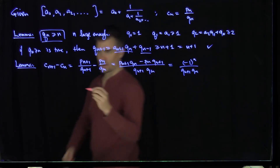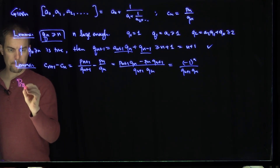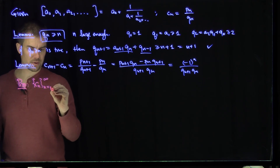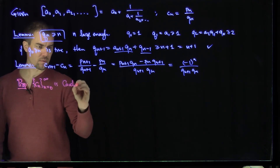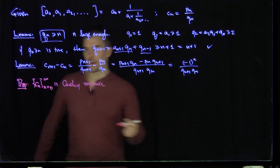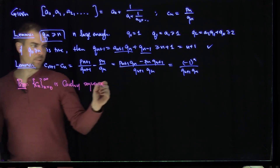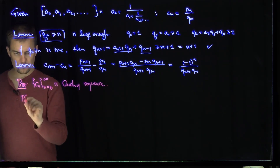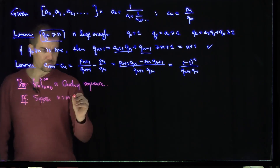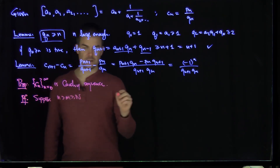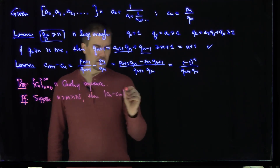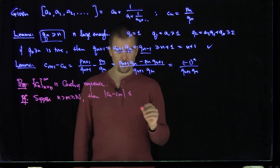I claim the sequence of convergents cn, n going from 0 to infinity, is a Cauchy sequence. Here is the proof. Suppose n is greater than m is greater than or equal to some large number N. I'm going to estimate the difference between cn and cm using the triangle inequality repeatedly, introducing cn-1, cn-2, and so on all the way down to cm.